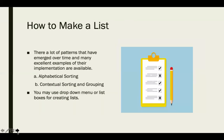So the next point is how to make a list. There are a lot of patterns that have emerged over the time and many excellent examples of their implementation are available. You can have alphabetical sorting in a list like whenever you have an address book or contact list in your mobile phones. It's normally alphabetically sorted. Another type is that is contextual sorting and grouping by logically connecting the ideas in a list. And then you may use drop down menu or list boxes for creating lists.